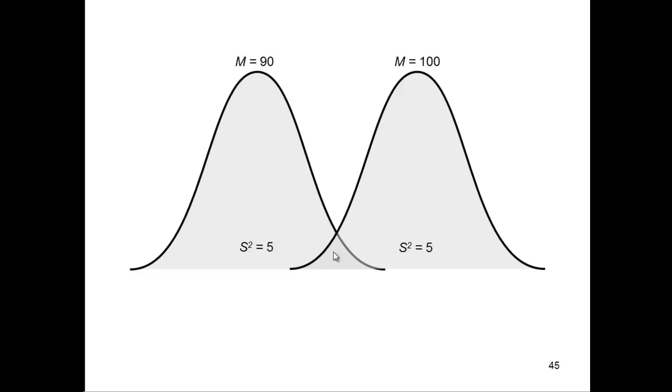And as the overlap decreases, the t-test gets larger. And here's the t-value that I calculated from these values. The sample size is 20 in both groups. And you get a t calculated of negative 14.14 in this case, based on mean of 90, 100, and variances of 5, and sample size of 20.